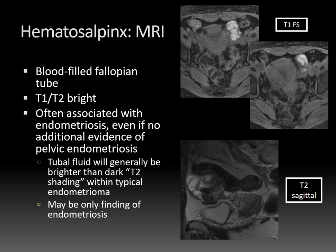An incidental finding in this patient: you can see bilateral tubal occlusion coils within the uterus causing susceptibility artifact, exaggerated by the fact that this is a gradient echo image, which emphasizes susceptibility artifact.